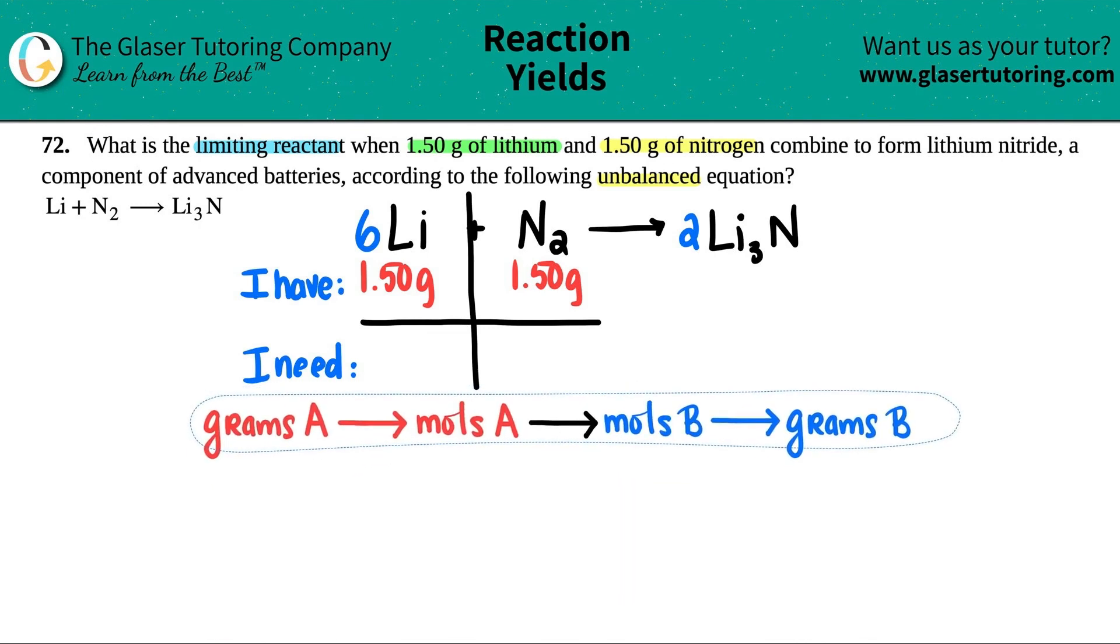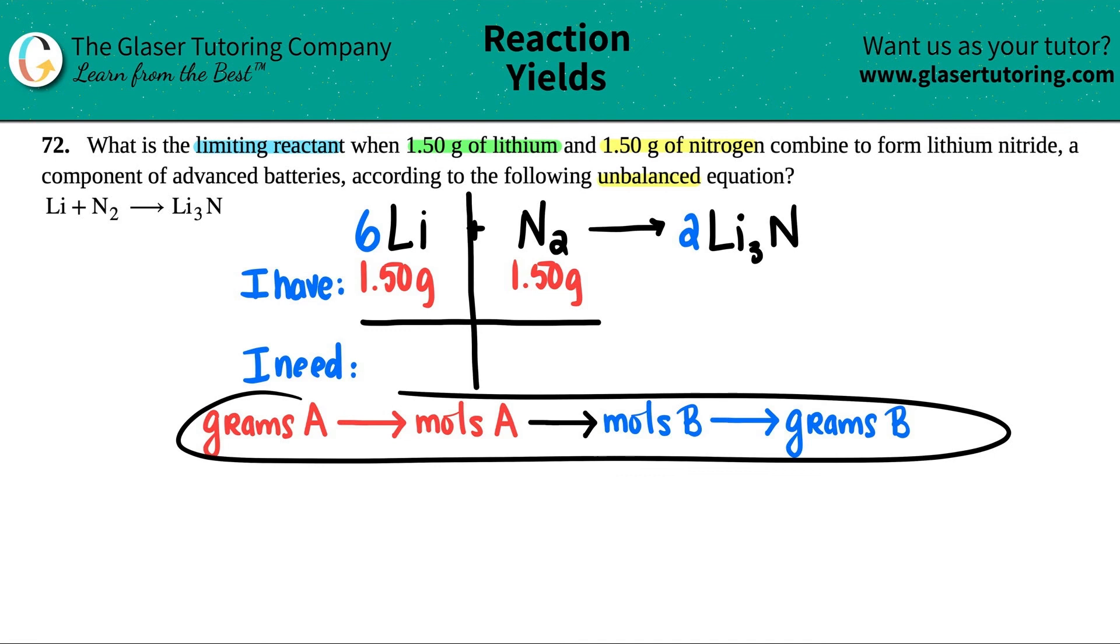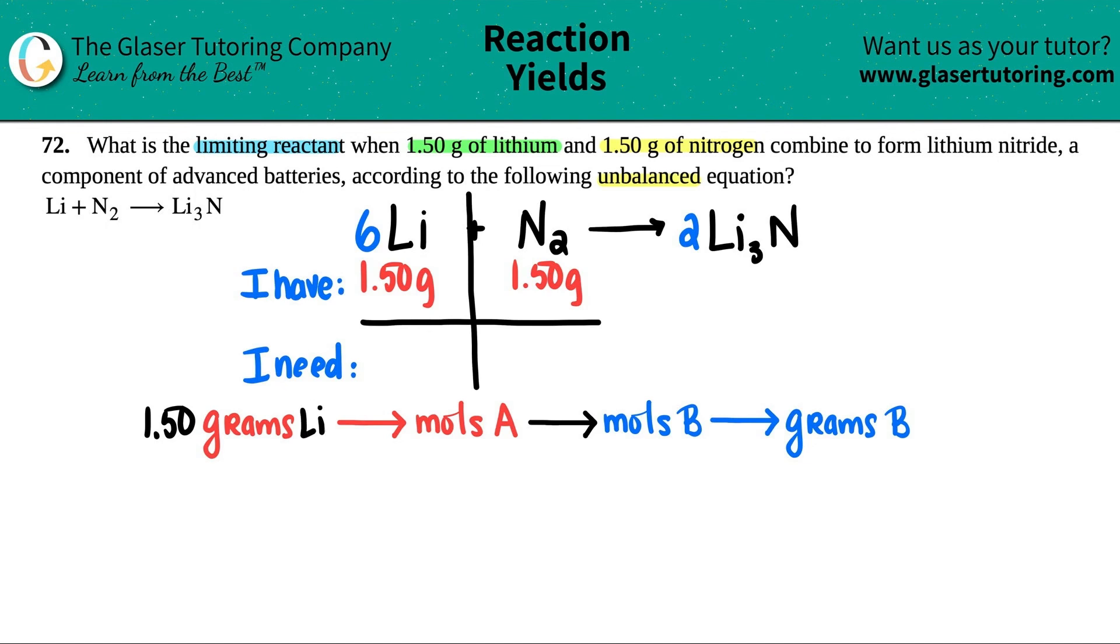So I'm going to start with the 1.5 grams of the lithium, and use my grams to moles to moles to grams stoichiometry help guide here. And I'm just going to cater it to what I have. I have 1.50 grams of, not A anymore, but lithium. So I can convert to moles of lithium. Then I can go to moles of the one that I'm looking for, which is N2, and then finally grams of N2.